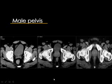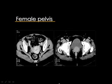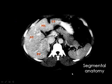Lower down there is a difference between the male and female pelvis. In the male pelvis you see the seminal vesicles and the rectum posterior to the urinary bladder, and lower down you see the prostate. In the female, you can see the fundus of the uterus above the urinary bladder, and the part of the uterus located between the urinary bladder and the rectum represents the cervix. The fundus is above the urinary bladder and the cervix is behind it.